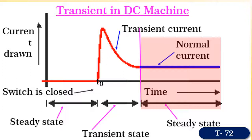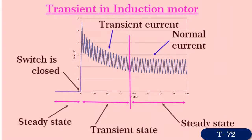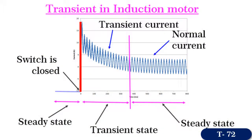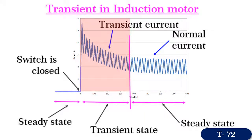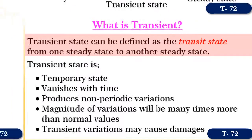Observe that the normal current drawn remains constant. Next, consider the transient in induction motor starting. Here also, you see that the starting current increases enormously and it takes some time to reach the normal state. Observe that during the transient state, current changes are non-periodical, but during steady state, current varies periodically. So, we can define a transient as a transition from one steady state to another steady state.